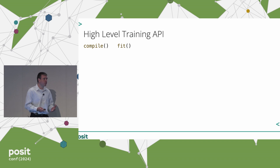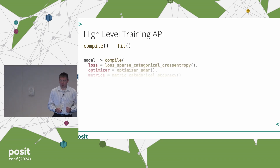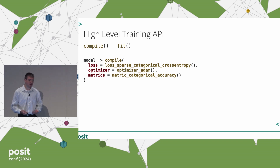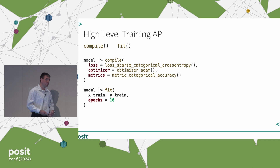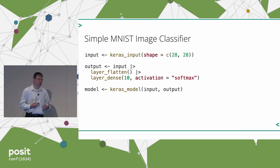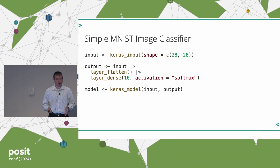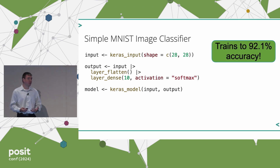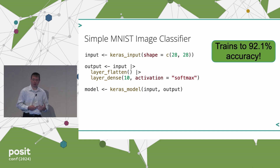Once you've created your model and you're ready to train it, this is a two-step process. First you call compile, where you specify the loss function, the optimizer, and the metrics. Then you call fit with your dataset, and your model starts learning. This example model is the simplest practical model you could make — it only has one trainable layer and no fancy tricks — but this remarkably simple model already trains to 92% accuracy on the MNIST dataset. This is what I mean when I say that deep learning is forgiving, because 92% accuracy is already plenty useful in many contexts, and you don't have to be a deep learning expert to walk away with a useful model.